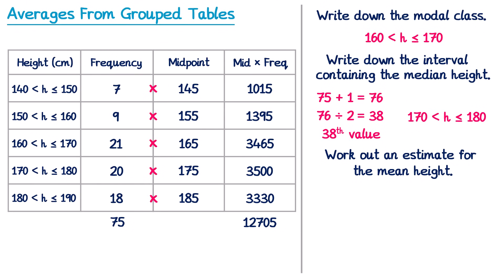Now to finish the question we divide the total height, which was 12705, by the total amount of people, which was 75. Using your calculator this will give you 169.4. So we can write down that the estimate of the mean is 169.4 centimeters.